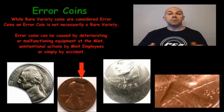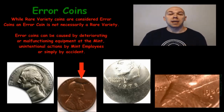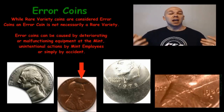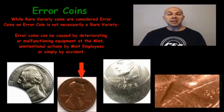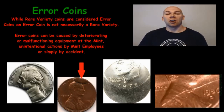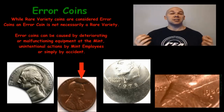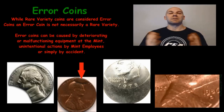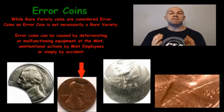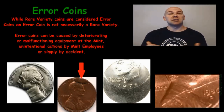Error coins — not to be confused with rare varieties — are coins that were manufactured incorrectly at the mint. This can be the result of unintentional actions by mint employees, deterioration or malfunction of equipment, or simply accidental. Common errors you may find are clipped planchets, rotated dies, die cracks, cuds, and off-center coins — that's just a few. Error coins are highly sought after by collectors and can potentially be valued much higher than face value depending on the error itself, the rarity, and the condition of the coin.